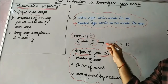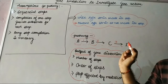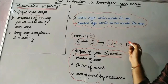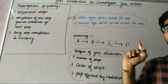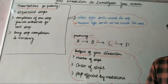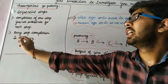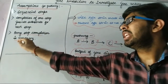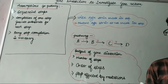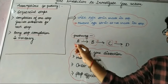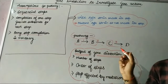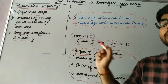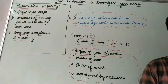B is converted into C, and then C acts as a substrate for the next sequential step. The third assumption is that every step's completion is necessary — all three steps are required for completion of this biosynthetic pathway.